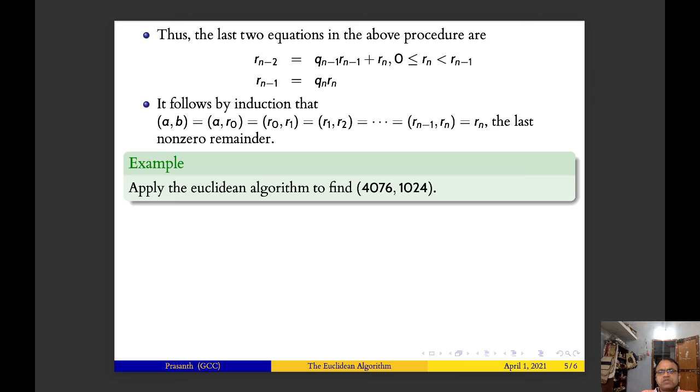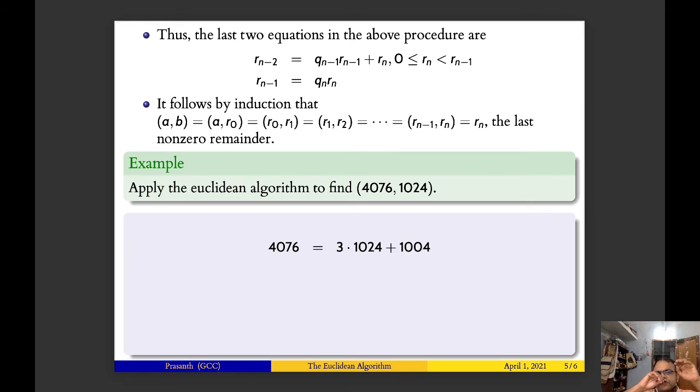So this is what we mean by Euclidean algorithm. Now we will try to find what is the gcd of 4076 and 1024. We know that 4076 is 3 times 1024 plus 1004. Now we divide 1024 by 1004, so 1024 equals 1 times 1004 plus 20. And 1004 is nothing but 50 times 20 plus 4.